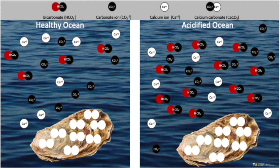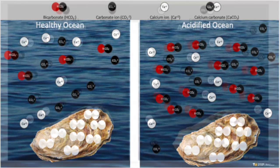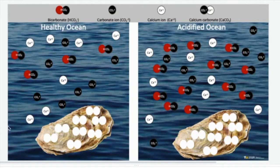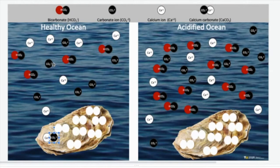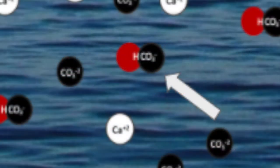To make the calcium carbonate molecules, you'll need to collect a calcium ion, drag it to the oyster shell, and then collect and drag a carbonate ion and pair it with the calcium. You'll keep trying to build as many calcium carbonate molecules as you can. You'll also notice another molecule here in the ocean.